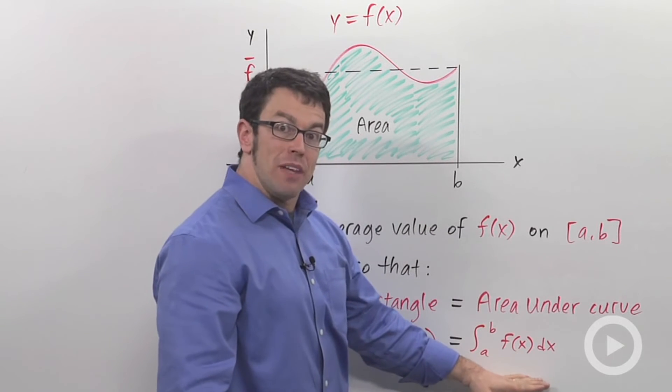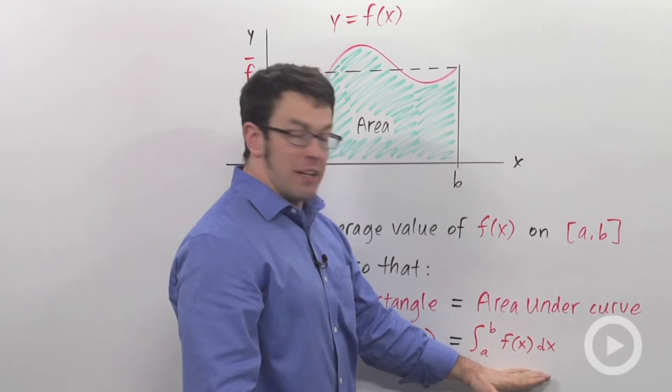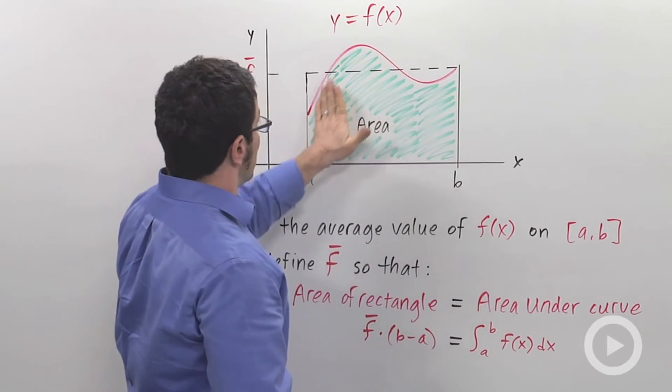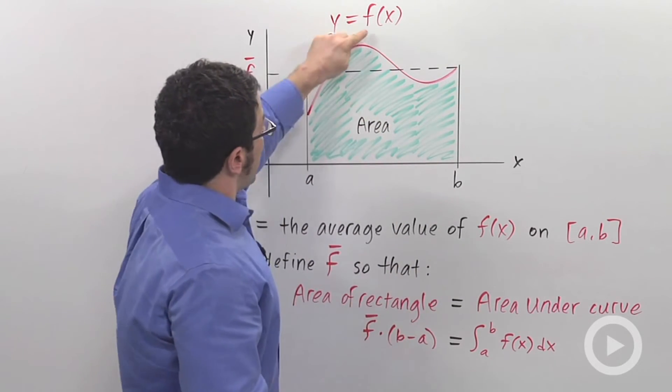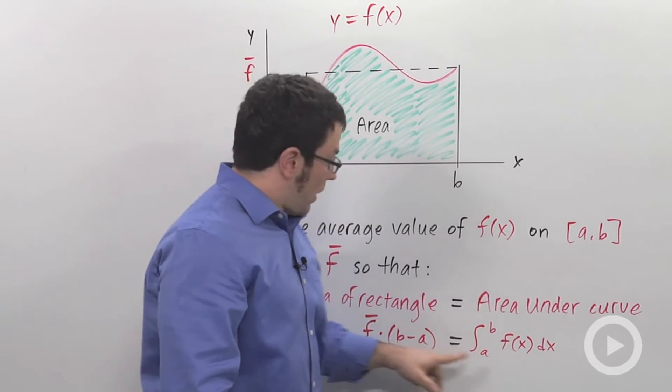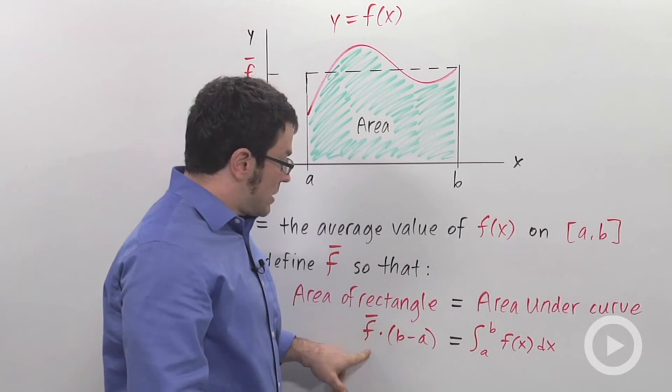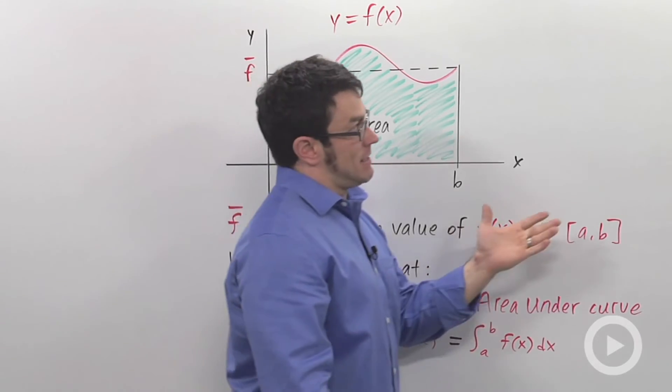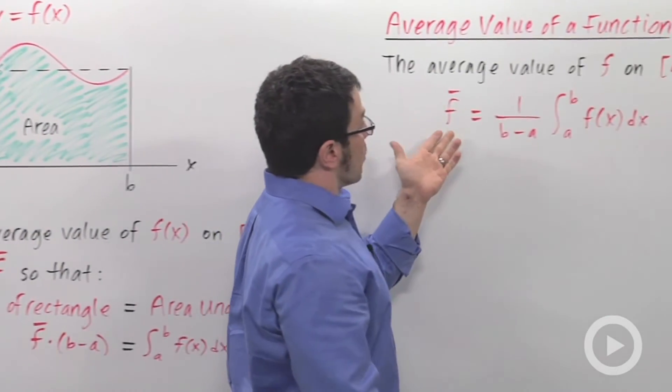On the right side, we have the area of the curve, which is the definite integral, right? The area of this green region, the definite integral of f from a to b. All we have to do to get a formula for the average value is divide both sides by this. And that leads us to the average value of a function formula.